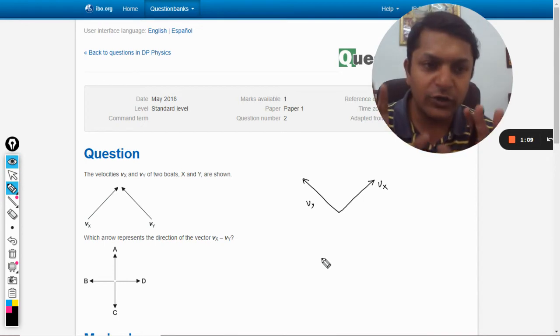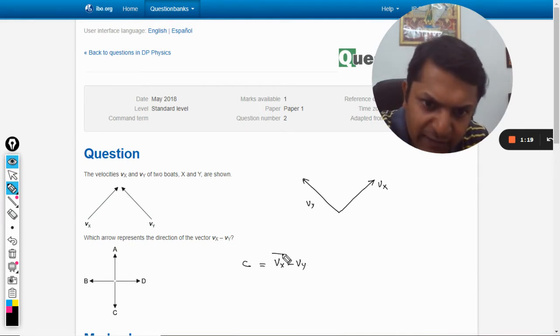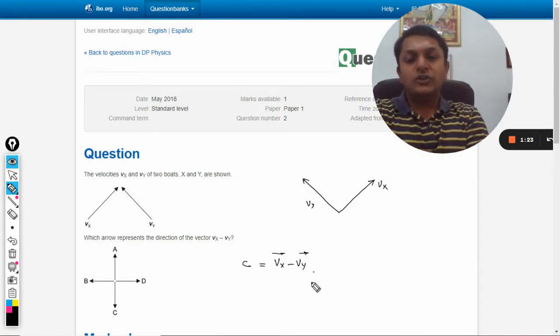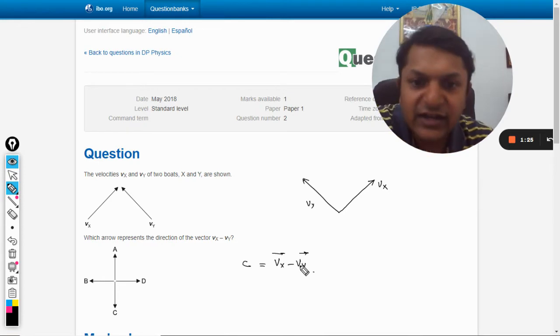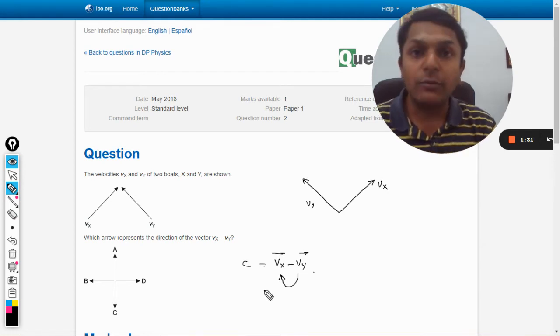Now when we are going to subtract, what are we going to do? Please be very careful. It is vx minus vy, so let us say I am calling it c. So it is vx minus vy, we write it like this. Whenever we do this, we create a vector from y to x.